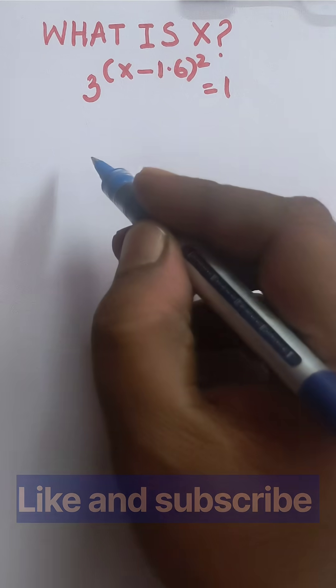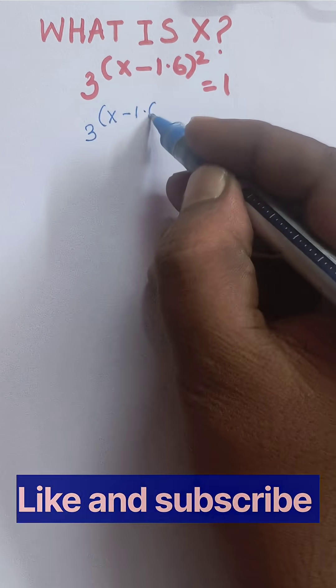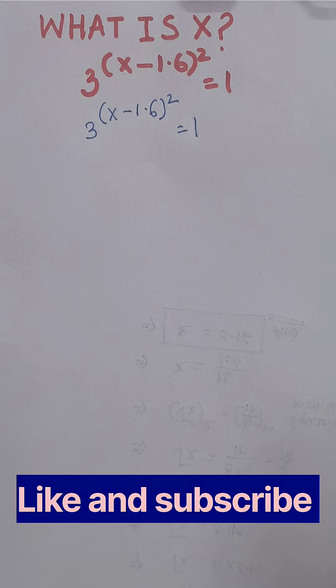Hey viewers, here's the expression given: 3 raised to (x minus 1.6) whole square is equal to 1. Can you solve this?